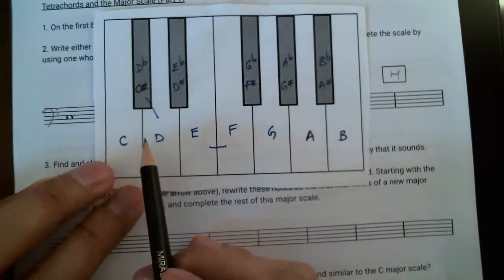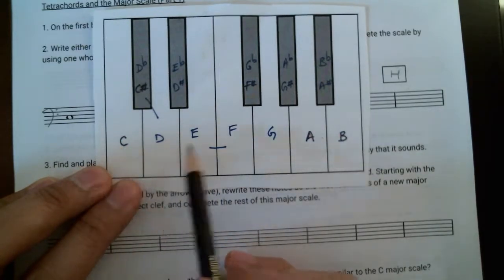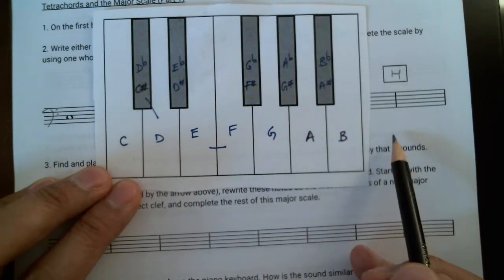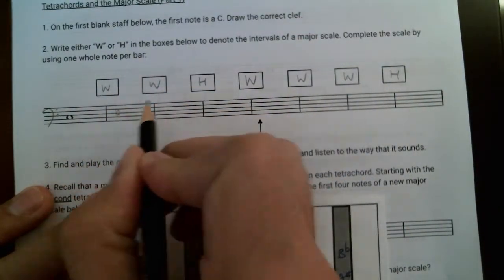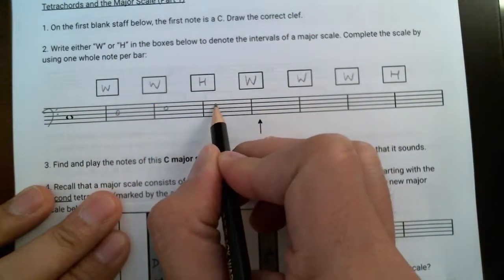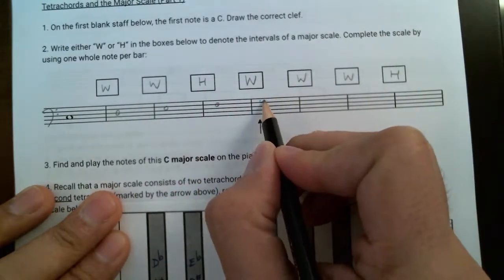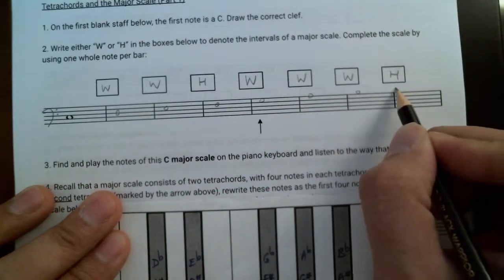The two tetrachords in this case would be C, D, E, F and then G, A, B, C. Okay, so I'm just going to write this down here. C, D, E, F, G, A, B, C.